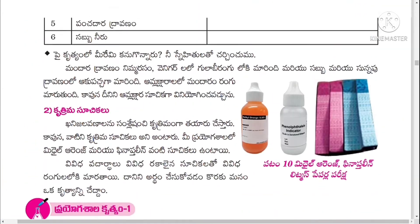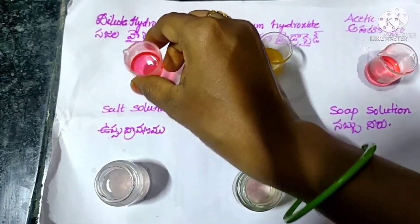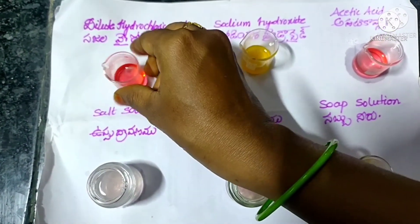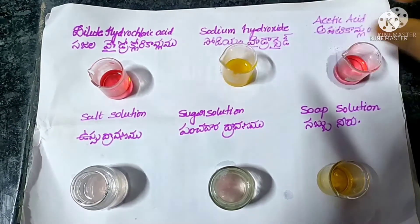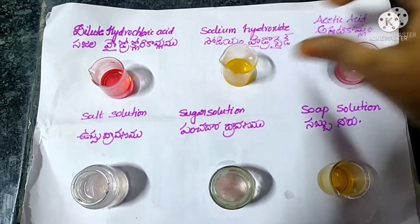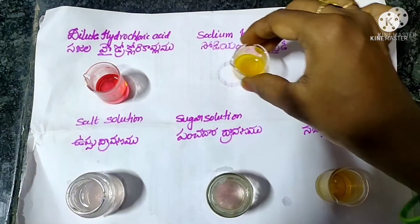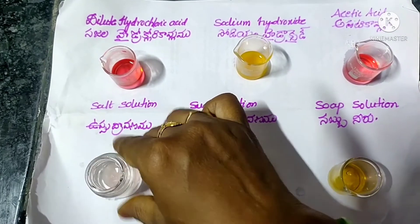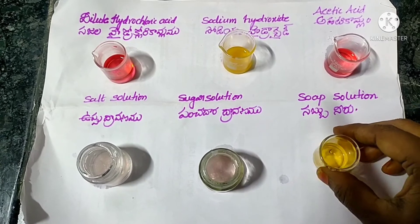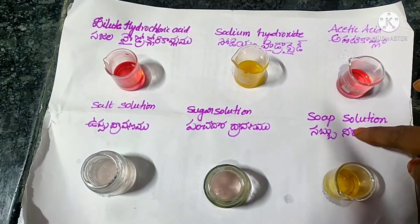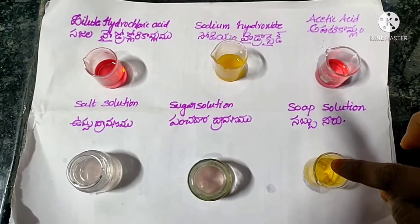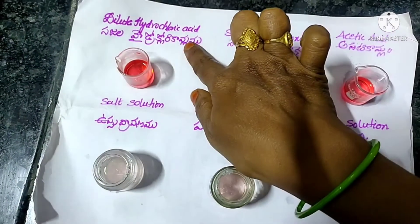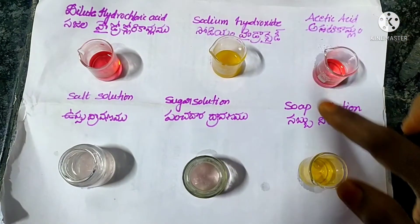The next indicator is methyl orange. Add two drops of methyl orange to dilute hydrochloric acid solution — the acidic solution will turn red. Add few drops of methyl orange to sodium hydroxide — it will turn yellow. Add few drops of methyl orange to acetic acid solution — it will turn red. Add few drops of methyl orange to salt solution and sugar solution — it does not change any color. Add few drops of methyl orange to soap solution — it will turn yellow. So methyl orange turns red in acids and yellow in bases.